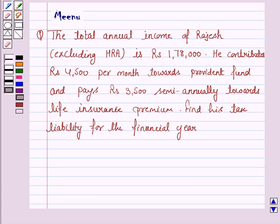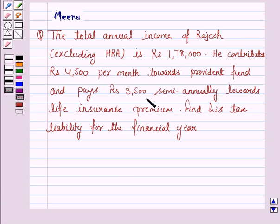Hello and welcome to the session. Let us discuss the following question. The total annual income of Rajesh excluding HRA is Rs. 1,78,000. He contributes Rs. 4,500 per month towards Provident Fund and pays Rs. 3,500 semi-annually towards life insurance premium. Find his tax liability for the financial year.